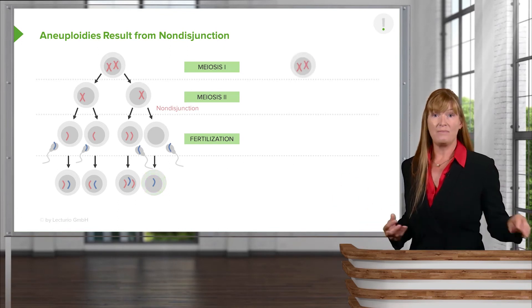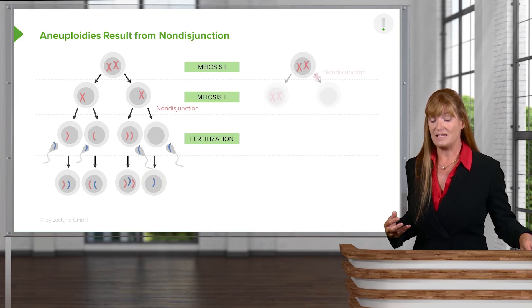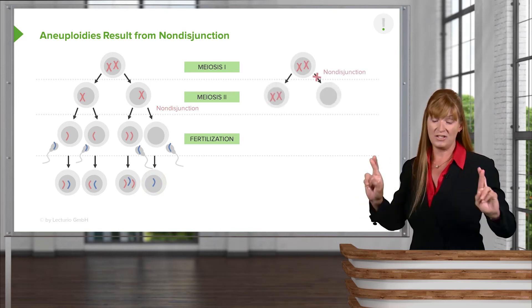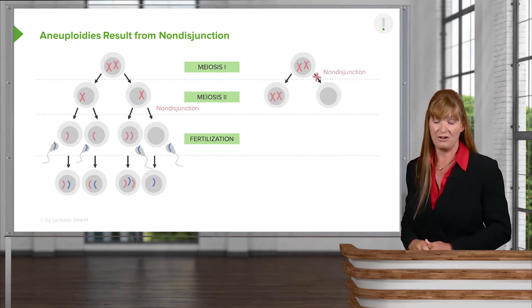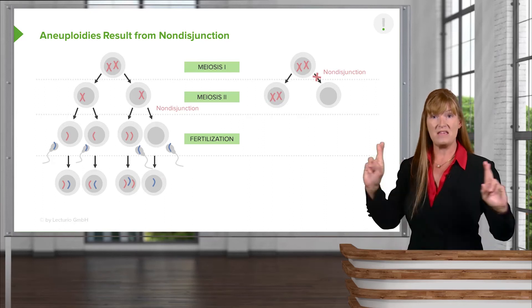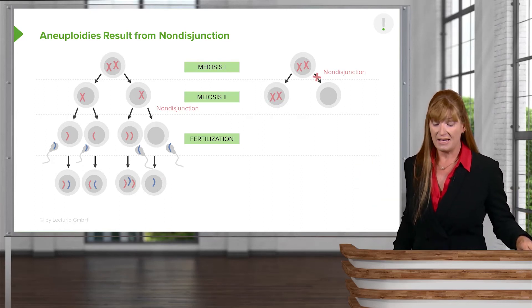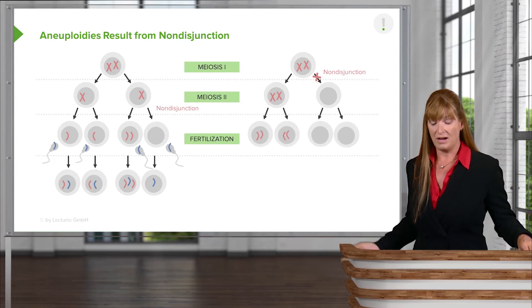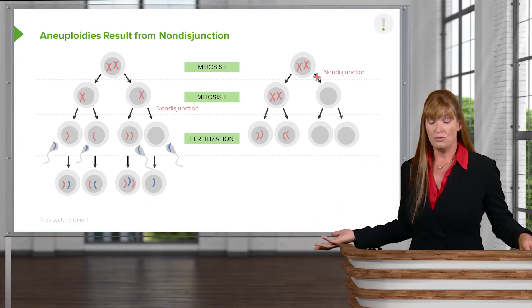Now, the other option is that meiosis I is where we see the non-disjunction, the non-separation or non-segregation of chromosomes. This is where the homologous pair doesn't segregate. And so we see that two products could end up having two chromosomes.